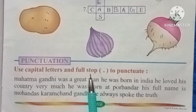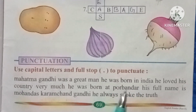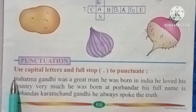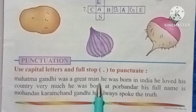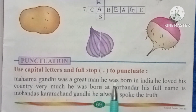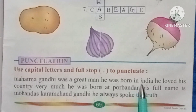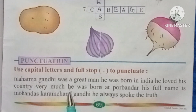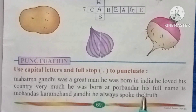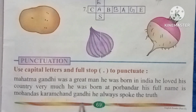Use capital letters and full stops to punctuate the following: Mahatma Gandhi was a great man. He was born in India. He loved his country very much. He was born at Porbandar. His full name is Mohandas Karamchand Gandhi. He always spoke the truth.